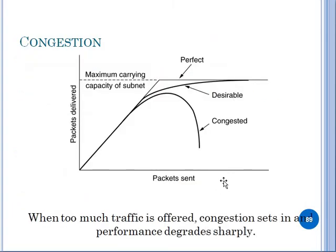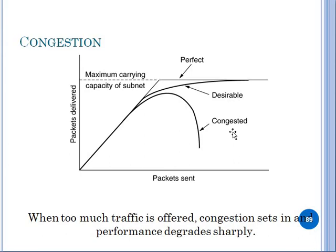If there is traffic in the network, performance will degrade sharply. Packets delivered versus packets sent shows a maximum limit. If the number of packets sent is not matching what is delivered, it means our network is congested and traffic has been generated. The sender's bandwidth becomes slow.